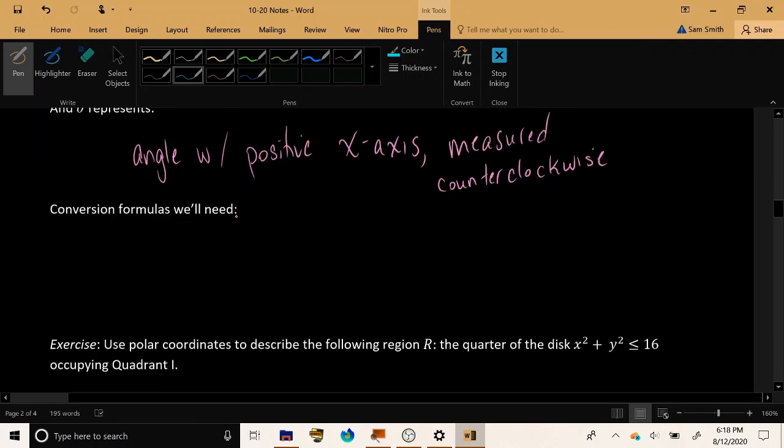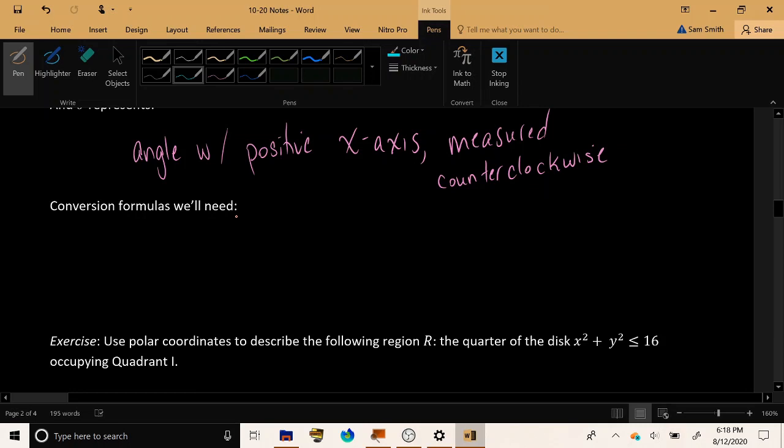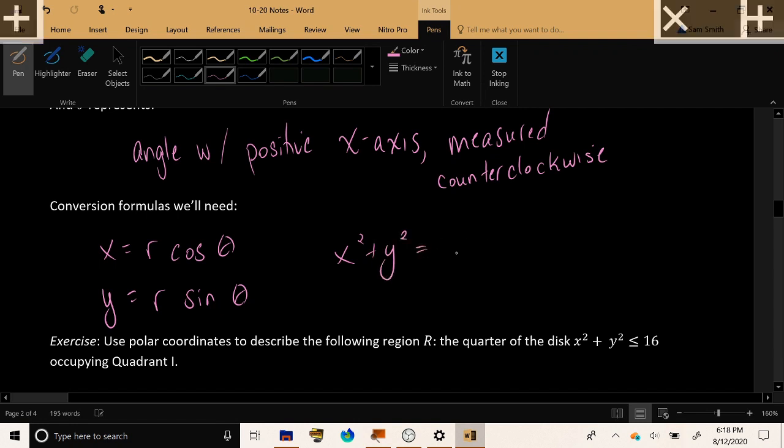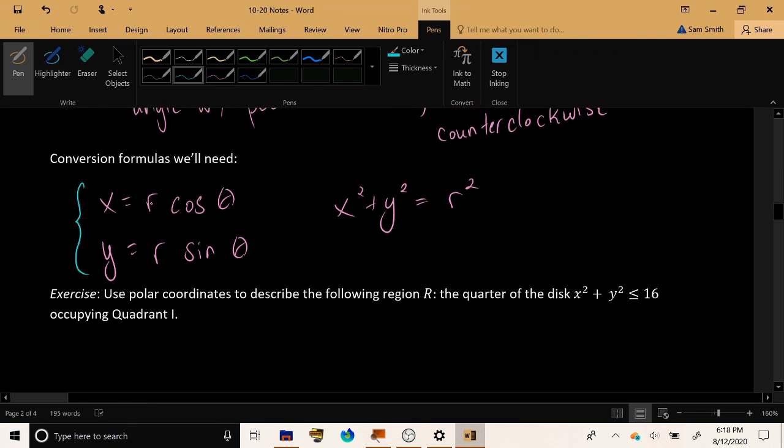We have some common conversion formulas from polar to Cartesian and back again. x can be written as r cosine theta, y can be thought of as r sine theta, and if you encounter x squared plus y squared, that can always be replaced with r squared. These three formulas are the ones we'll be using the most often when we use polar coordinates instead of Cartesian coordinates.